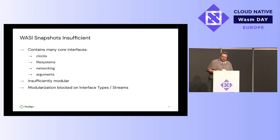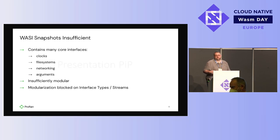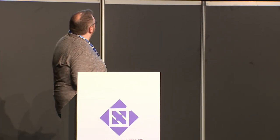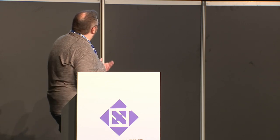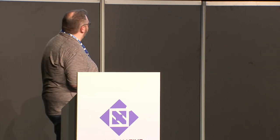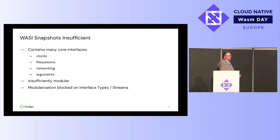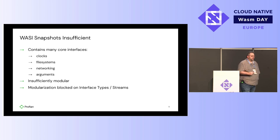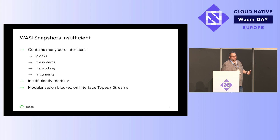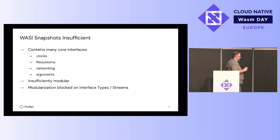The WASI snapshot is really insufficient. This is what we're all basically trying to run on today, and it has a lot of niceties — things like clocks, file systems, networking arguments, et cetera. However, it's really not modular. You sort of have to buy into the whole thing. One counter-example of where this doesn't work is the NARCS project. Although we are working on file system support today, as of our latest release there is no file system support at all — if you call any file system APIs, you'll simply get an error. That will disappear in a future release with transparently encrypted file systems.